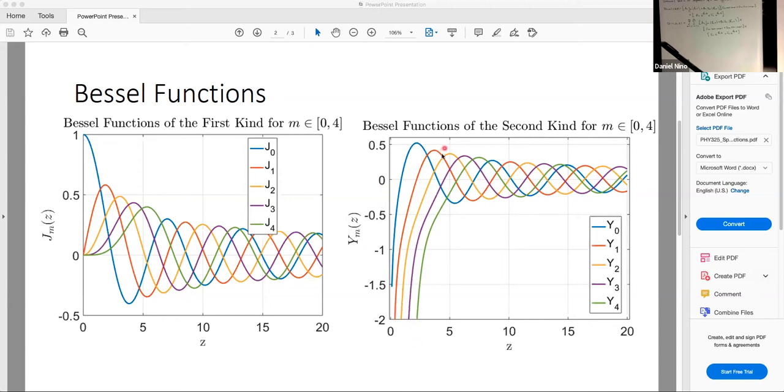And then eventually, they start oscillating about the z is equal to 0 line. So the most important aspect of the Bessel functions of the second kind to remember is that they diverge as z tends to 0, and then they keep oscillating.